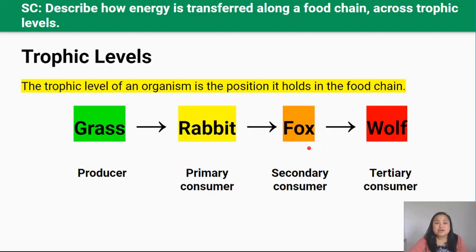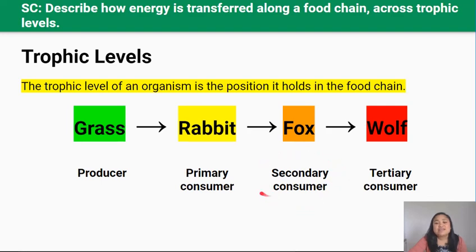At the bottom of the food chain is always the producer. One level higher is the primary consumer, which eats the producer. One level above that is the secondary consumer, which eats the primary consumer. And one level above the secondary consumer is the tertiary consumer, which eats the secondary consumer.